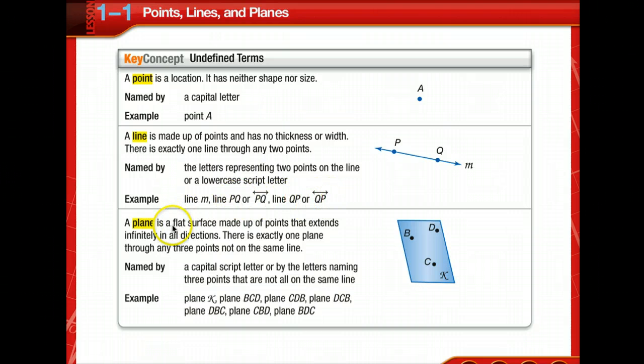And then there's a plane. A plane is just a flat surface made up of points that extends infinitely in one direction, or any direction, all directions. So if you think of a table as a plane, it has certain shape and size, but the plane that we're talking about in geometry, it just continues going on forever and ever, just like a line does. There is exactly one plane, which means one and only one plane, through any three points not on the same line.